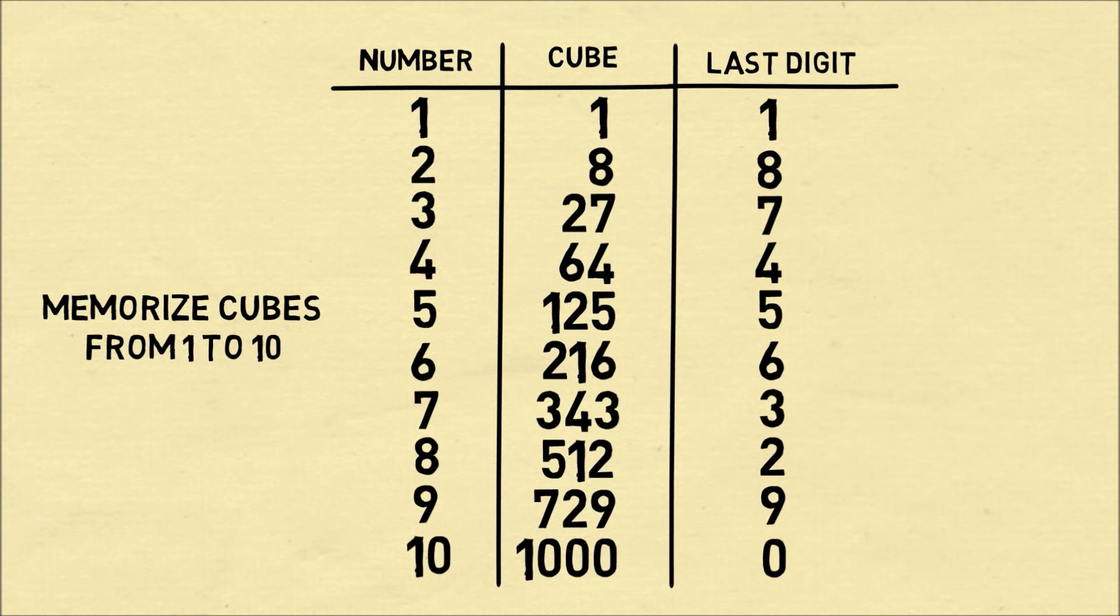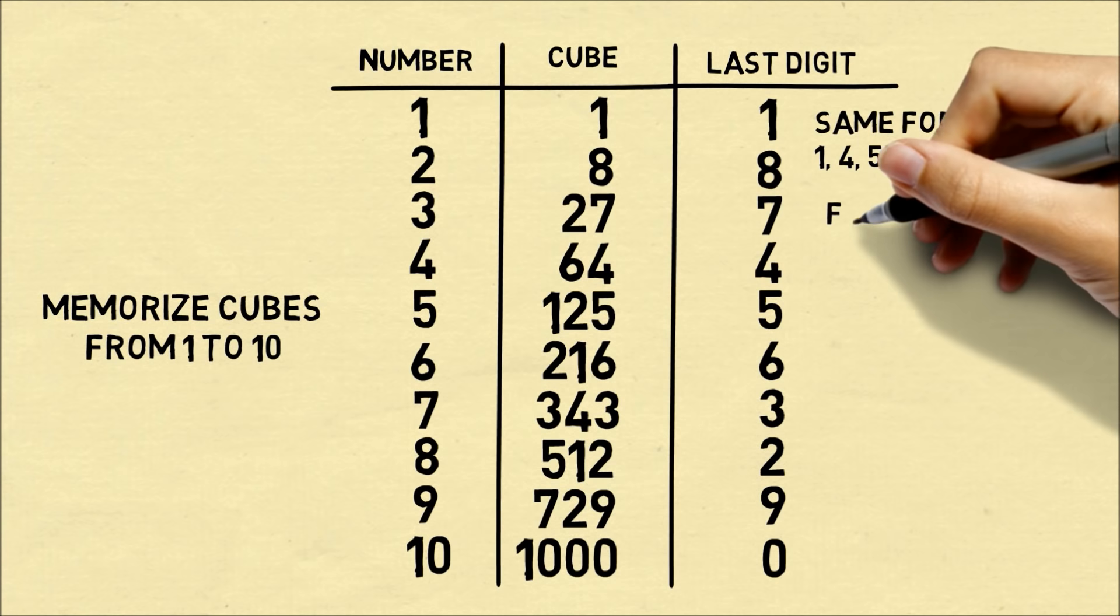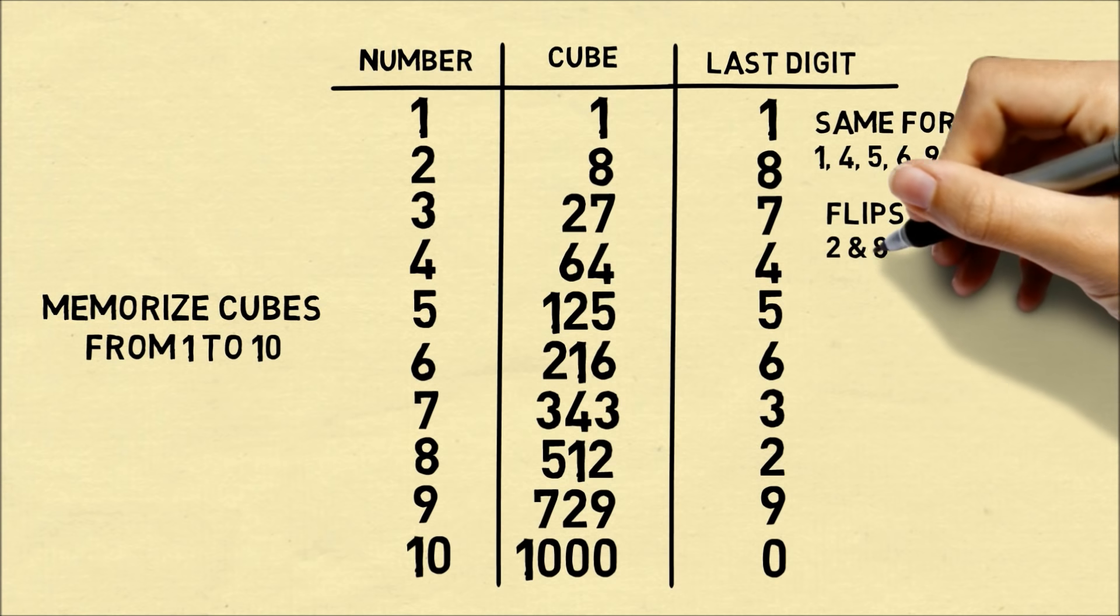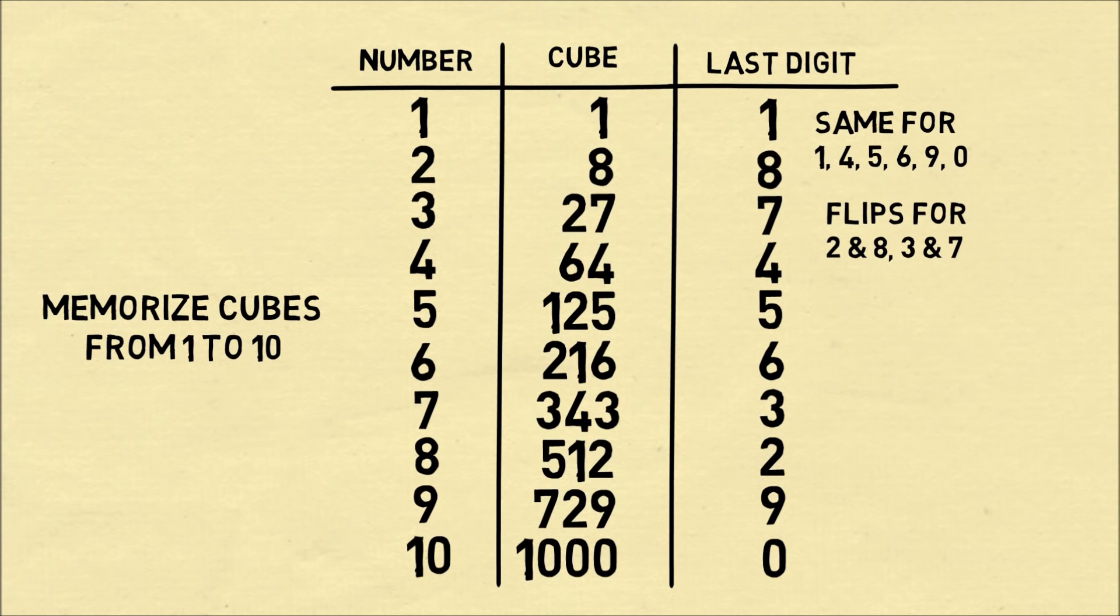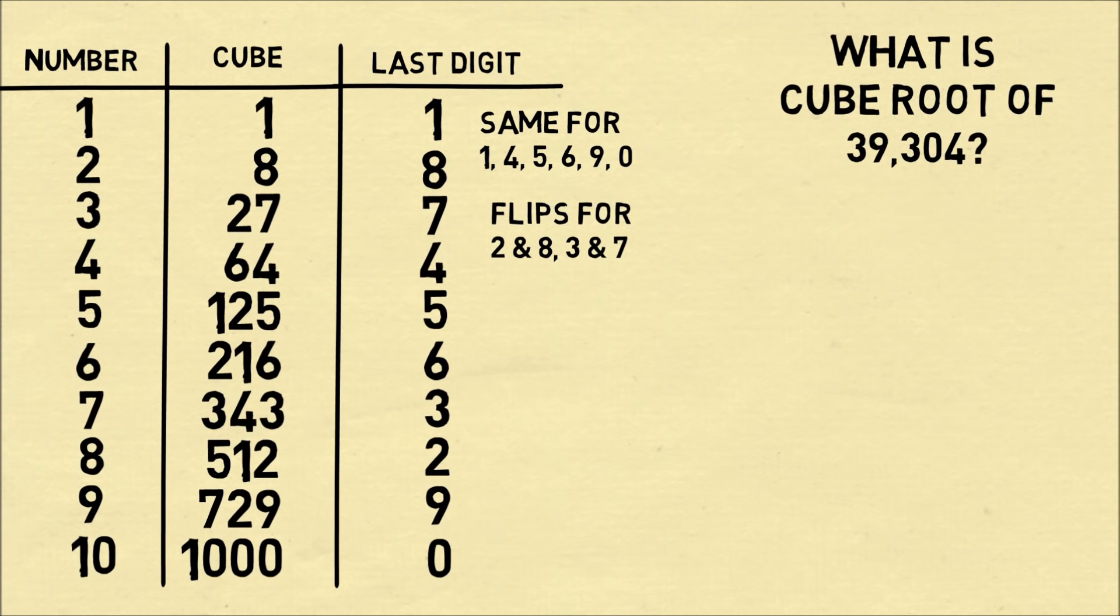When you memorize these 10 digits, you should also remember the last digit. An easy way to remember this is that for the numbers 1, 4, 5, 6, 9, and 0, the last digit is the same as the numbers. And for the numbers 2 and 8, and 3 and 7, the last digit flips. So the last digit for 2 is 8, and the last digit for 3 is 7, and vice versa.